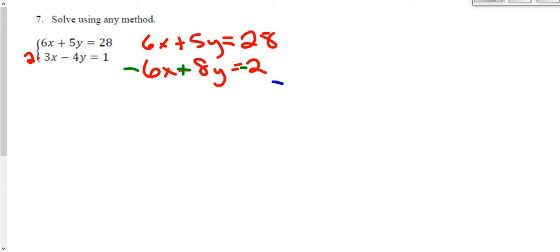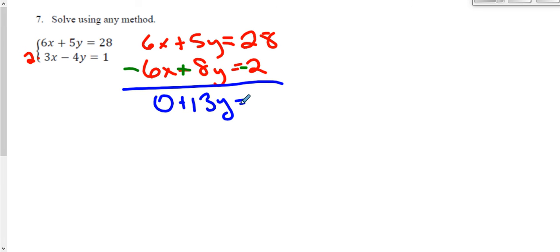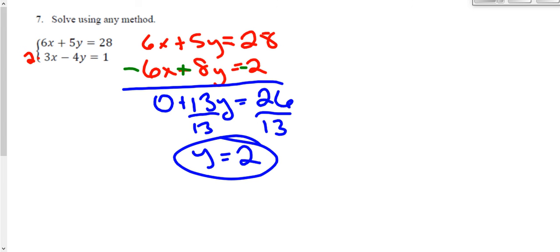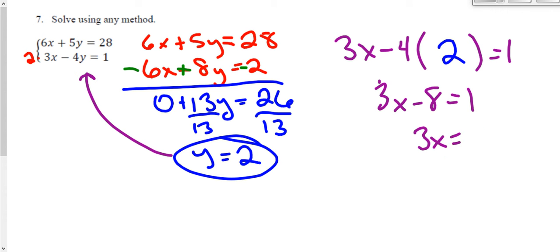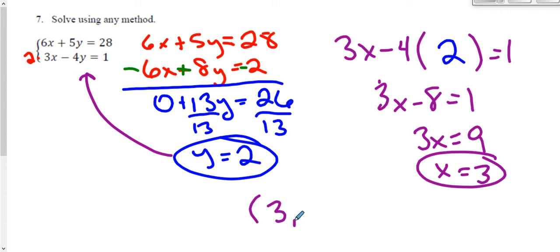Now we're ready to combine terms up and down. The 6x's cancel. I have 8y and 5y, giving me 13y. And 28 minus 2 is 26. Dividing by 13 shows me y equals 2. I'll plug 2 back into the bottom original equation: 3x minus 4 times 2 equals 1, so 3x minus 8 equals 1. Adding 8 to both sides gives 3x equals 9, and dividing by 3 tells me x equals 3. So the final answer is x equals 3, y equals 2.